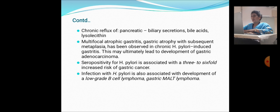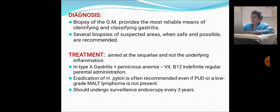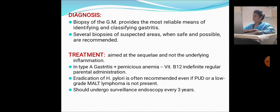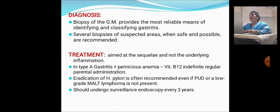Diagnosis of chronic gastritis: biopsy provides the most reliable means of identifying and classifying gastritis. Several biopsies of suspected areas are recommended when safe and possible, choosing areas most likely to yield the best histopathological report. Treatment aims at the sequelae rather than the underlying inflammation. In type A gastritis with pernicious anemia, vitamin B12 deficiency must be treated regularly parenterally, as it is not absorbed through the stomach. Eradication of H. pylori is recommended even if peptic ulcer disease or low-grade MALT lymphoma is not present. Patients should undergo surveillance endoscopy every 3 years.